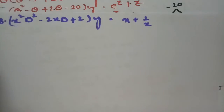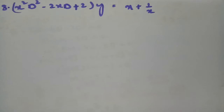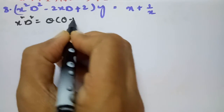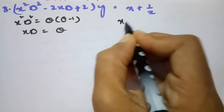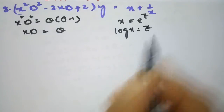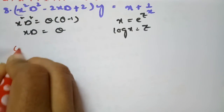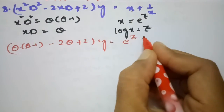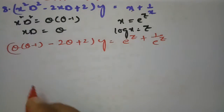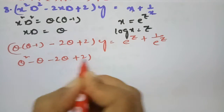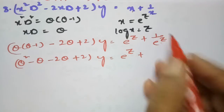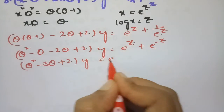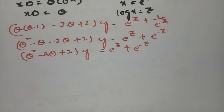The next equation is x²D² − 2xD + 2y = x + e^x. Again, x²D² → θ(θ−1), xD → θ, x = e^z. Substituting: θ(θ−1) − 2θ + 2 of y = e^z + e^(−z). Expanding: θ² − θ − 2θ + 2 of y = e^z + e^(−z), giving θ² − 3θ + 2 of y = e^z + e^(−z).